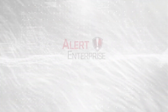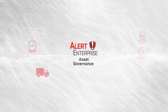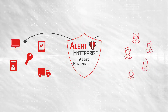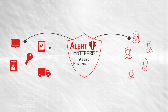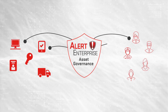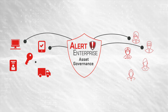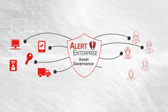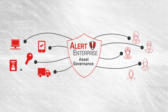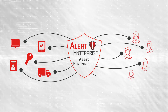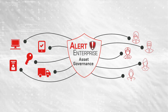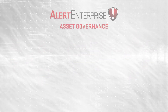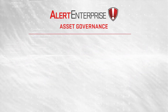Alert Enterprise Asset Governance allows you to connect physical assets to identities securely and efficiently throughout the lifecycle of the asset as it is transferred from one person to another. Our solution is completely automated and within your control.